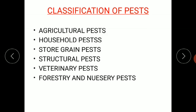Every pest that causes damage to at least any single entity — for example, they cause damage to the crop, or when present in our houses they cause annoyance, or they destroy stored grain material, or directly attack structural elements, or they attack animals we are interested in, or they attack forestry and nursery.